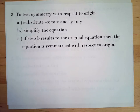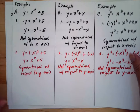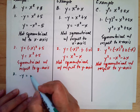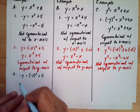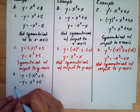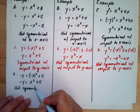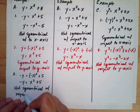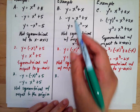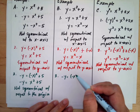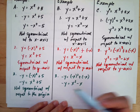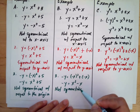Let's check if the equations are symmetrical with respect to the origin. For the first one, substituting negative y and negative x gives: negative y equals x squared plus 5. Since the y-term changes sign, this is not symmetrical with respect to the origin. For the third one, substituting gives negative y equals negative x squared plus negative x, which simplifies to negative y equals x squared minus x — not symmetrical with respect to the origin.